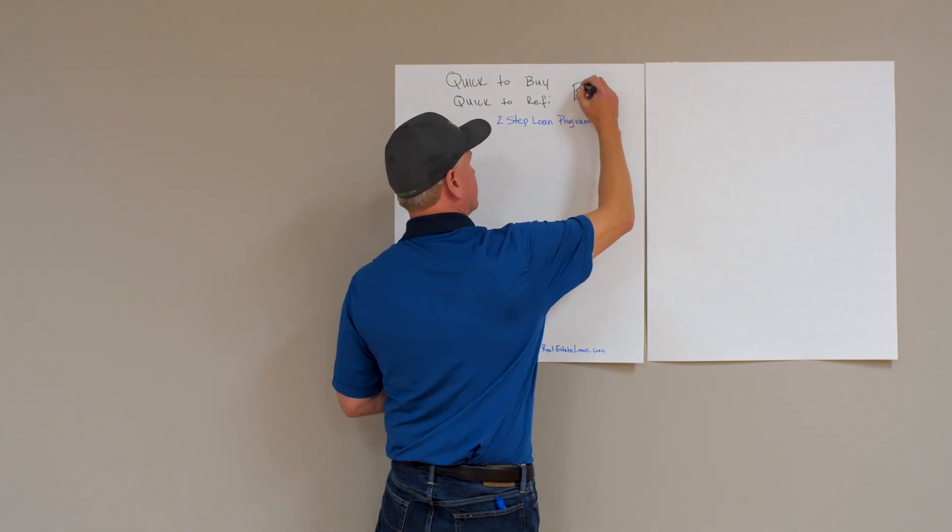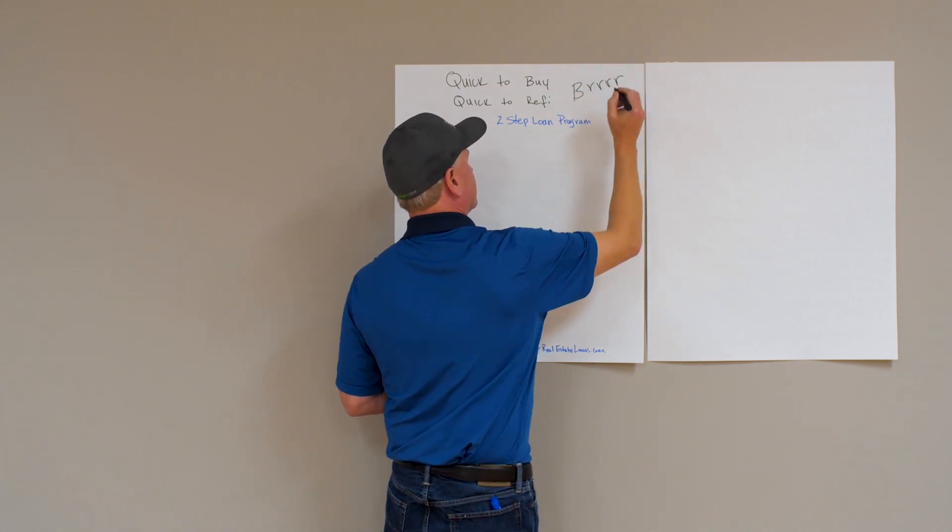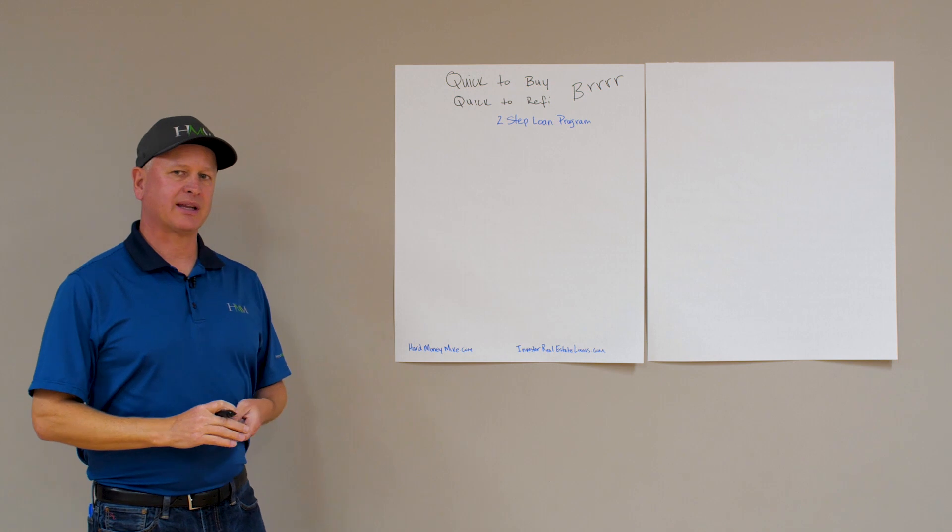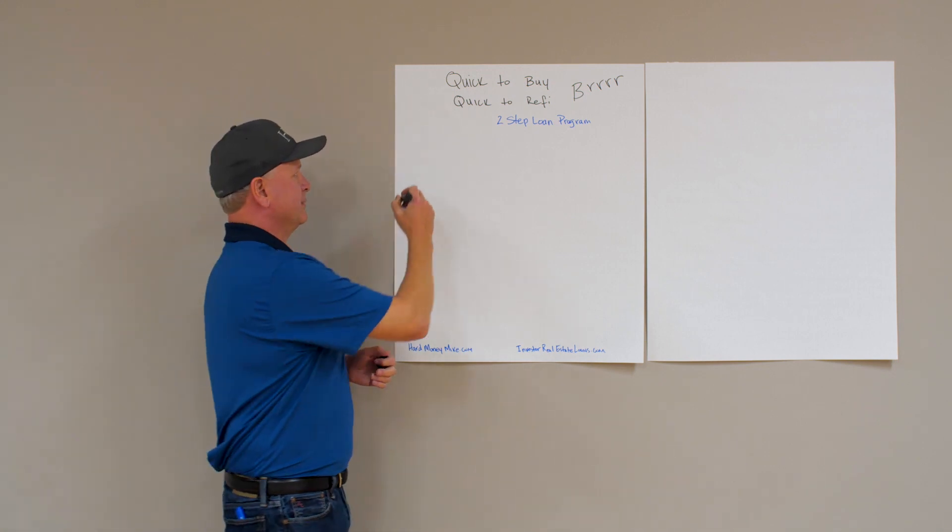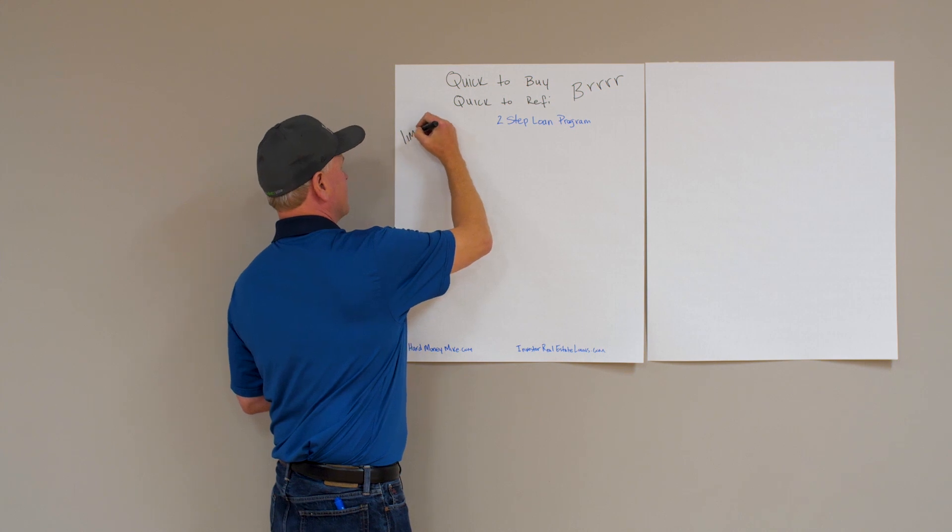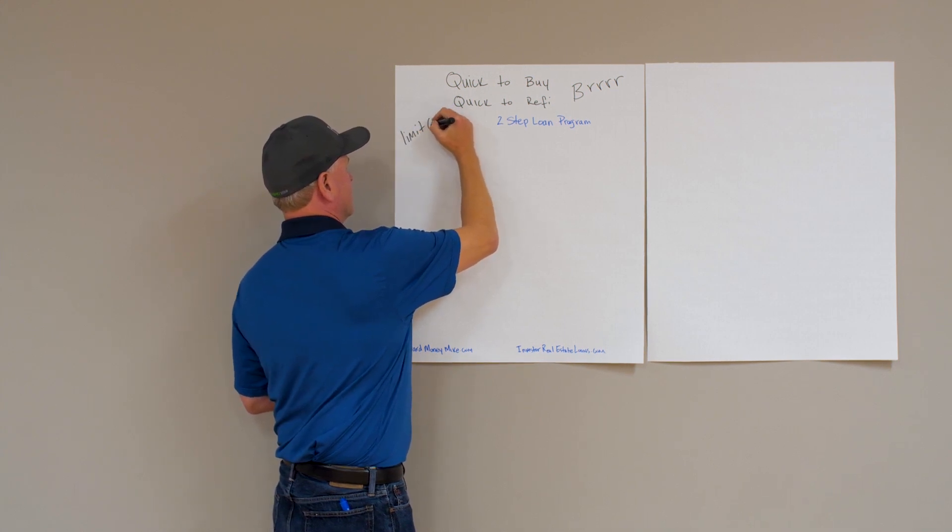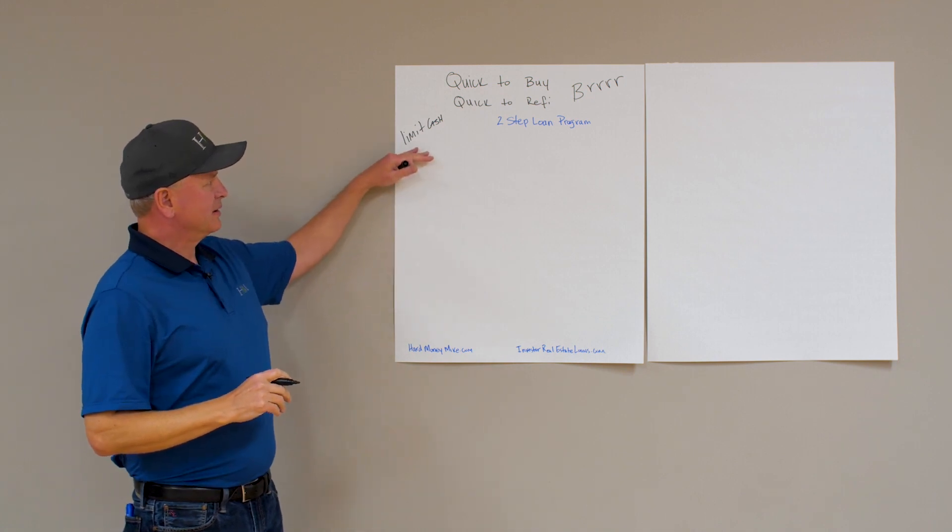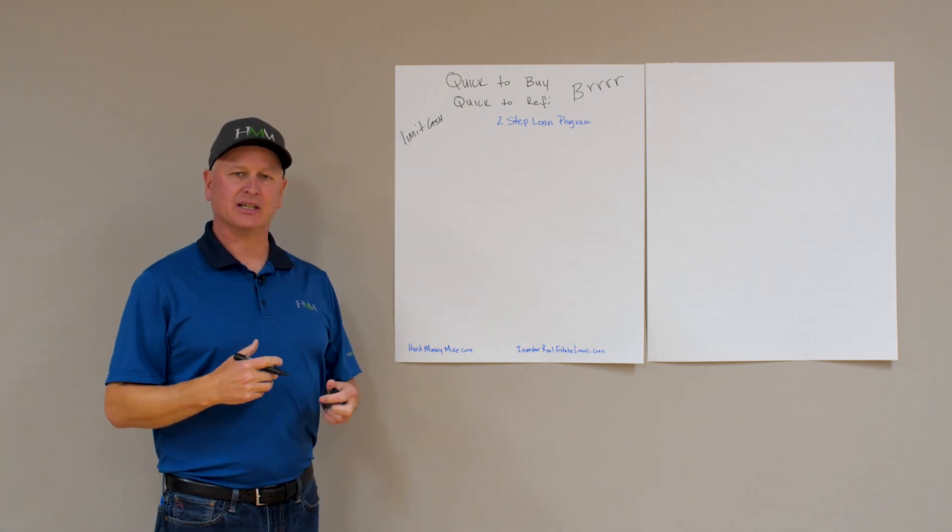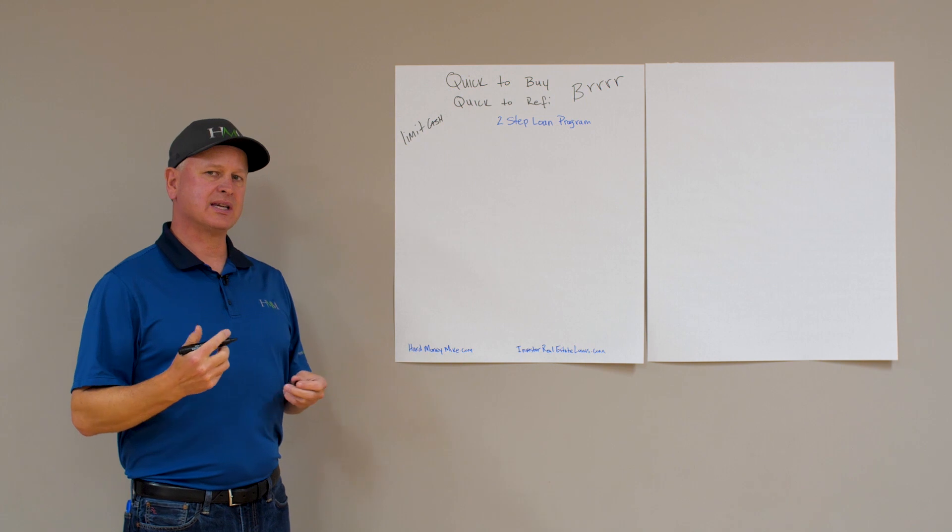When we look at the BRRRR method, one of the things that we always look at is clients who are looking to limit cash into the project. So if you're looking at using the BRRRR to limit the cash into your project, one of the things you have to look at is how do you set up properly your short-term loan.